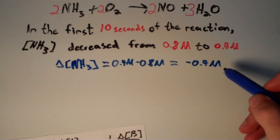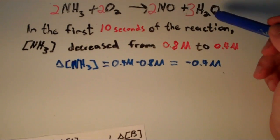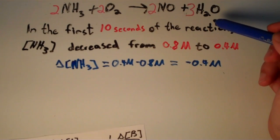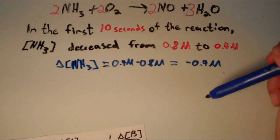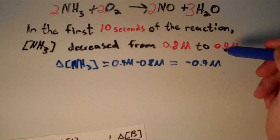Why is it negative? Well think about it. NH3 is a reactant in this equation, so it's getting used up, and so its concentration must be decreasing. So that means the change in concentration will be negative. So that negative sign makes sense.